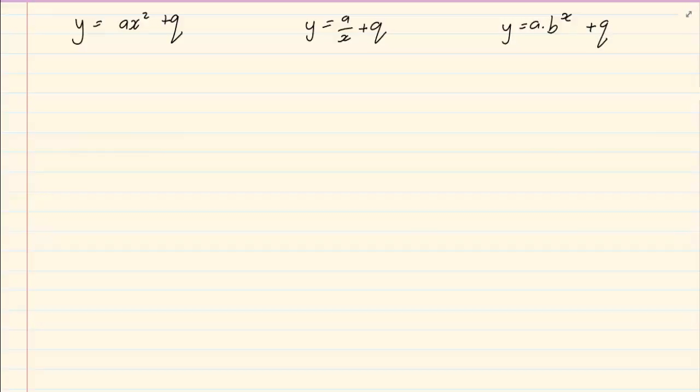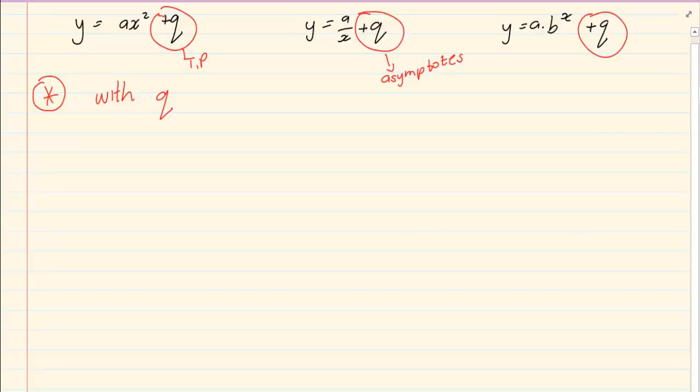When we want to get the equation of the graph, the steps are very similar. We're always going to start with q. Now we're going to substitute q. We know for the parabola, the q is the turning point. We know for the hyperbola and exponential, the q is the asymptote. So we always start by substituting the q.